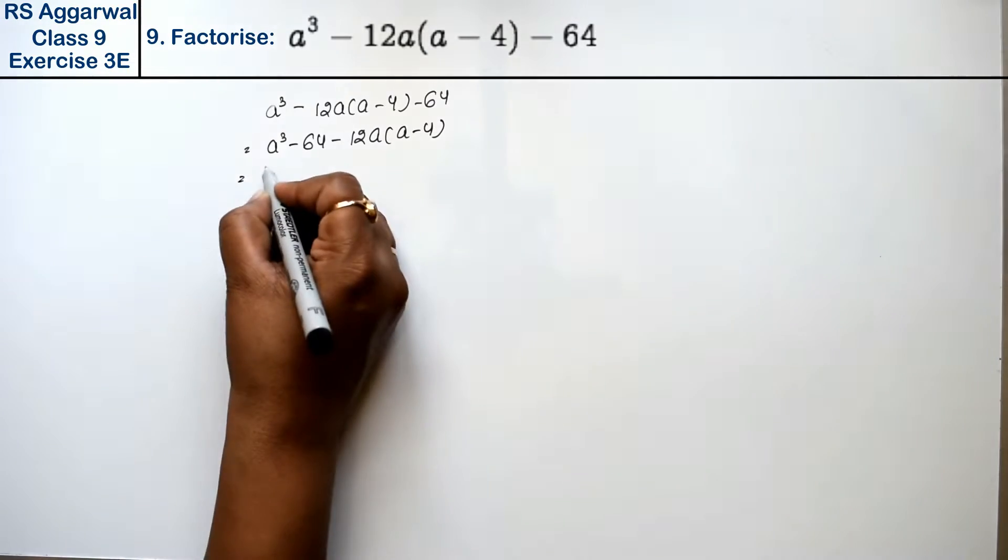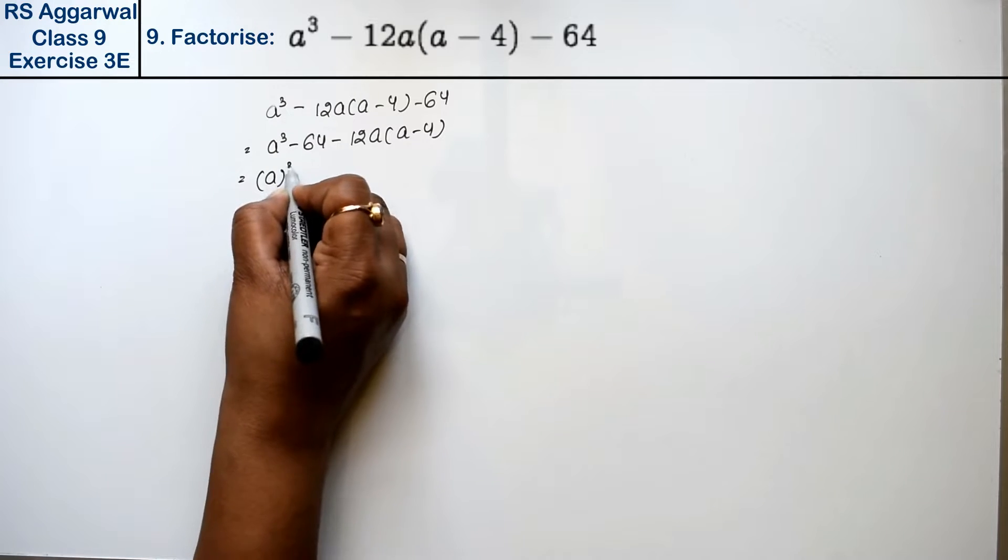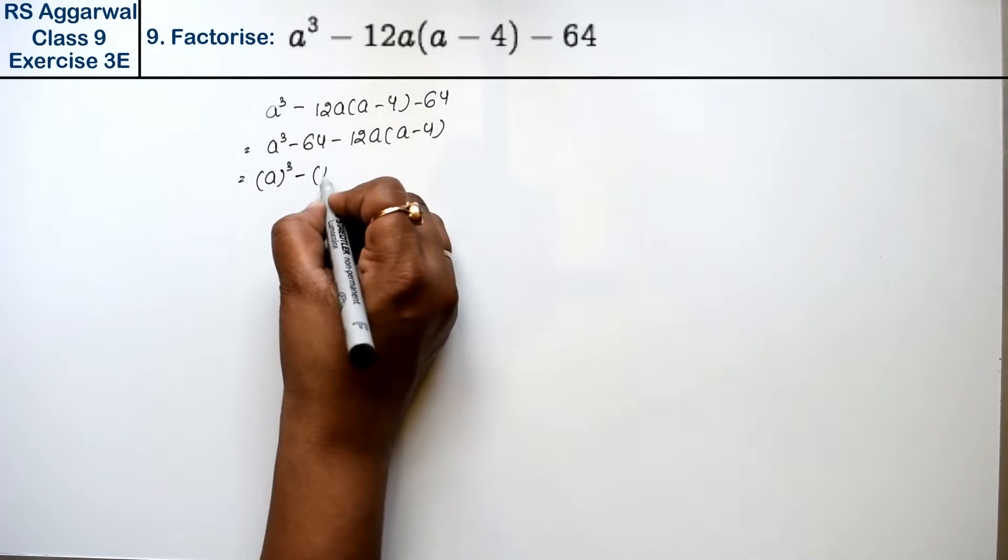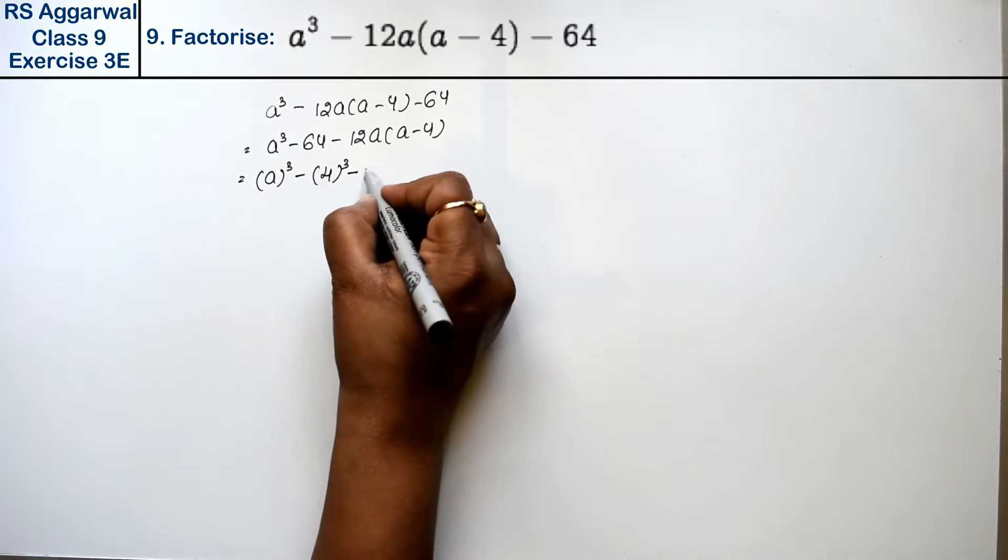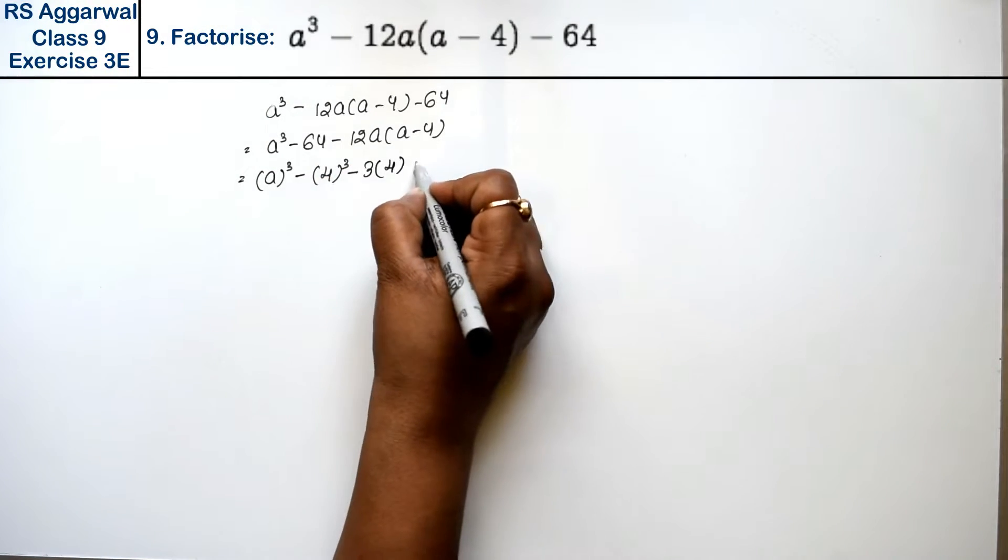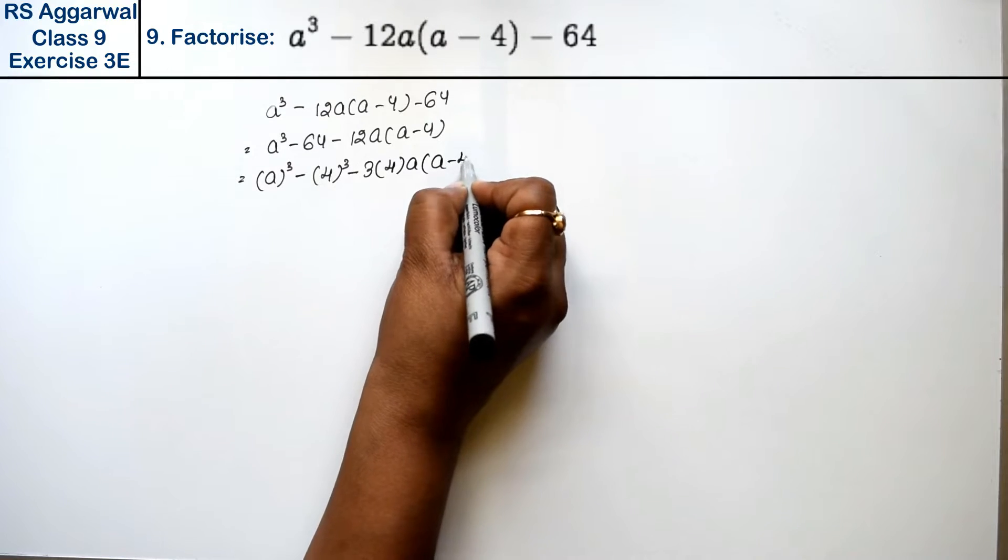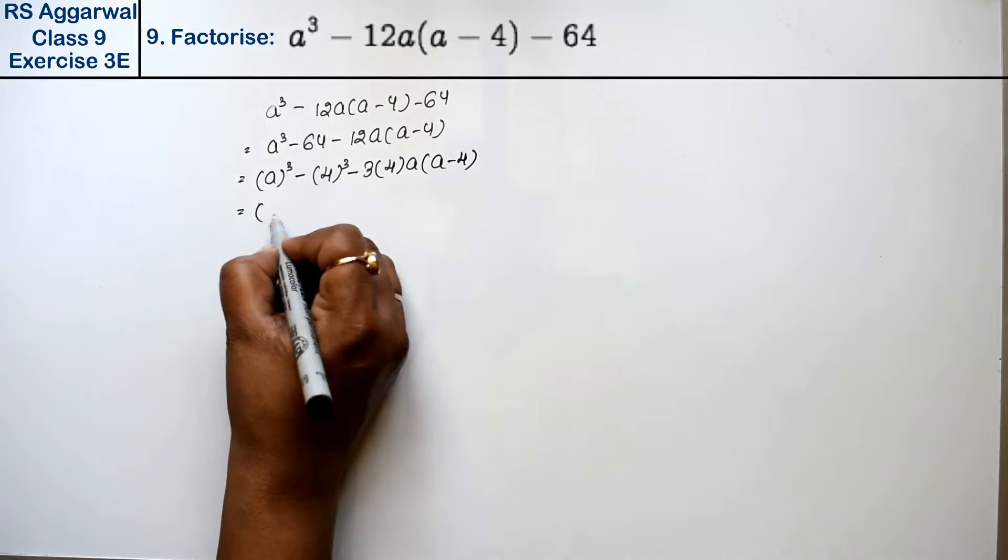Now see, this a³ is a³, and 64 we have studied earlier is 4³. And what can we write? 12 as 3 times 4, times a(a - 4).